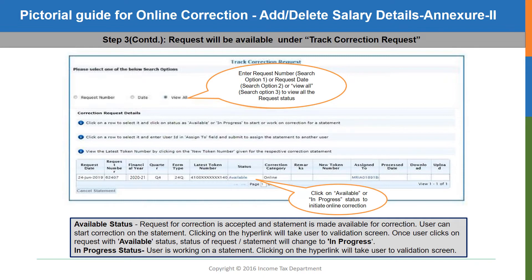Now the request will have four types of status. If the status is shown as available, you can click upon that and proceed with the correction. Once you click upon the available status, the status will change to in progress, which means that you have started working on that correction. If the status is showing as requested, it means the request is not yet processed by CPC and is not yet ready for correction. Another status is rejected, which means the CPC has rejected your request. Click on the hyperlink given on the status available to proceed further.